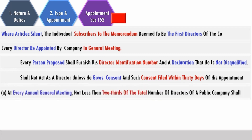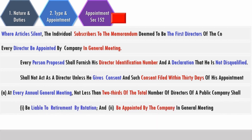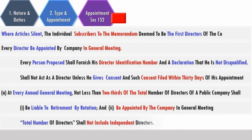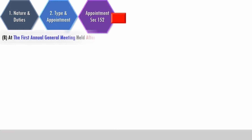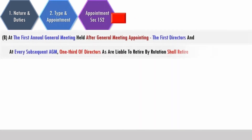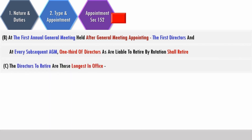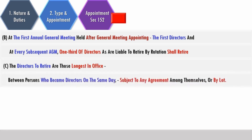At every annual general meeting, not less than two-thirds of the total directors are liable to retire by rotation and be appointed by the company in a general meeting. The total number of directors shall not include independent directors. The first directors retire at the first annual general meeting. At every subsequent AGM, one-third of directors liable to retire by rotation shall retire. The directors to retire are those longest in office; between persons who became directors on the same day, by agreement among themselves or by lot.